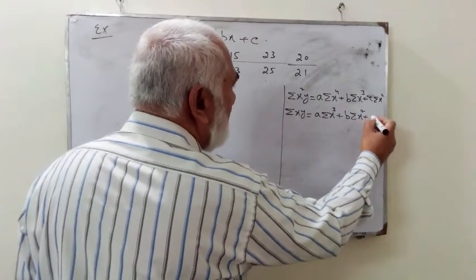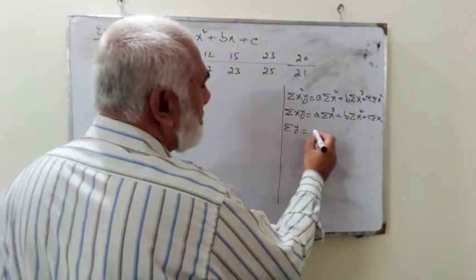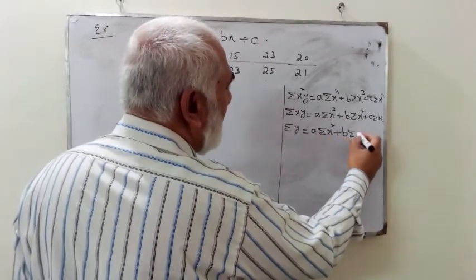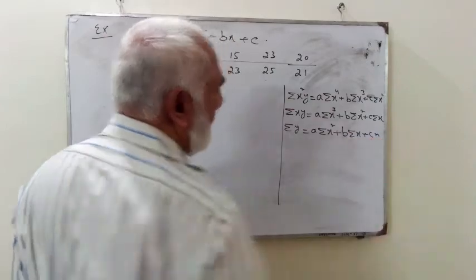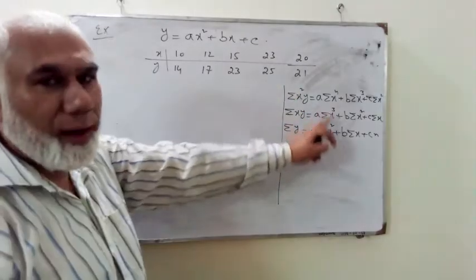And the second equation is Σxy equals a Σx³, b Σx², and c Σx. This was the second equation. And the third equation is Σy equals a Σx², b Σx, and the last was n. And what is n here? Of course, the number of points. So here you can count these—five points—so we can replace this n by five very easily.